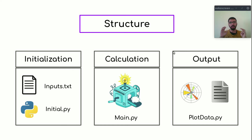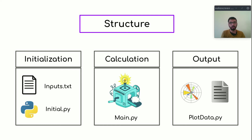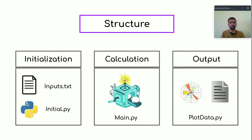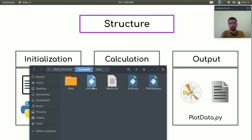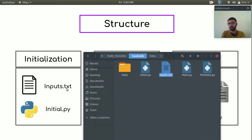Let's discuss the first pillar: structure. There are three main parts in our code. First is the initialization part, second is the calculation part, and third is the output part. In the initialization part we have two files: inputs.txt, our input text file, and initial.py which will initialize all inputs. The calculation part contains our solver in main.py, which is the actual code. The last part is the output file, plot_data.py, which creates output in the form of different plots and also creates an output text file.